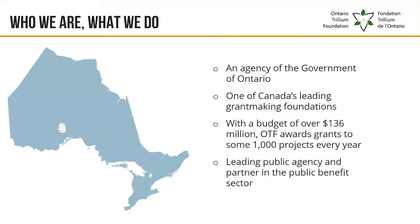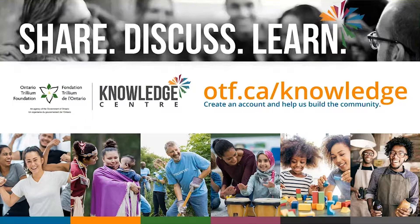As a bit of background, the Ontario Trillium Foundation is an agency of the Government of Ontario and one of Canada's leading grantmaking foundations. With a budget of over $136 million, we award grants to about 1,000 projects every year. We're a leading public agency and partner in the public benefits sector. We've just launched the Knowledge Center, an online shared learning environment that will connect Ontario's public benefits sector. We're offering it as part of our commitment to support Ontario communities beyond simply granting, through our services-to-community work.